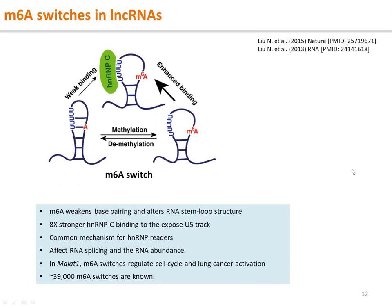lncRNAs can have local stem-loop structures called m6A switches, where m6A modification can weaken the base pairing in the stem region and expose the buried poly-U motif for HNRNPC binding. The binding affinity with m6A is eight times stronger. Notably, HNRNPC readers do not directly bind to m6A; rather, the reader binds the adjacent poly-U motif. In lncRNA MALAT1, the m6A switch regulates its RNA splicing and abundance, which leads to lung cancer progression and metastasis.